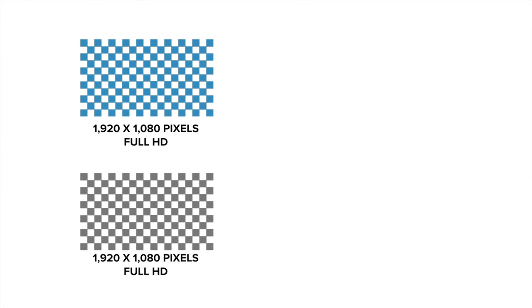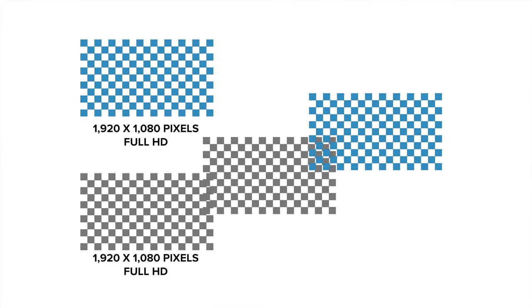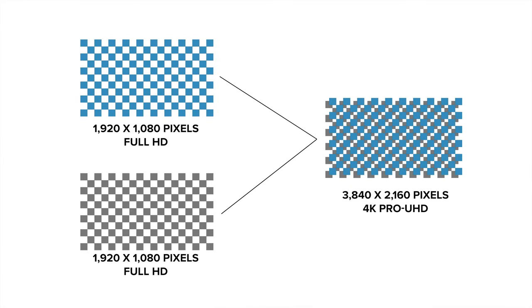Pixel shift is a way to simulate a higher resolution image than the projector is capable of producing natively. As technology advances, some manufacturers use pixel shift to come closer to the current spec before they launch projectors with the newest resolution. You can always look at the native resolution of the projector to find out the truth.